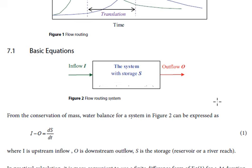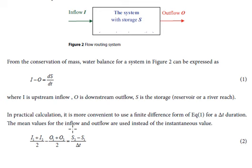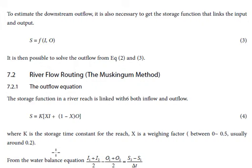If the inflow and outflow vary linearly with time, then we can use the average value as shown here. To estimate the downstream outflow, it is necessary to get the storage function that links the input and output.